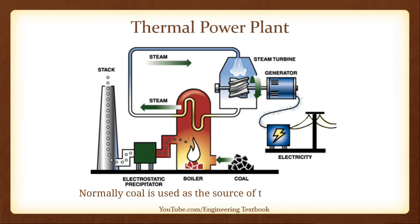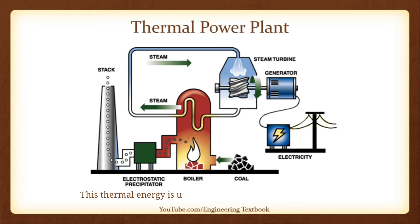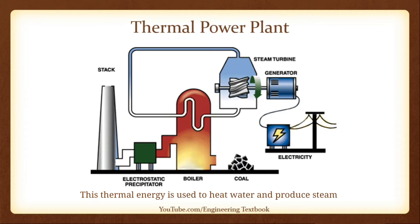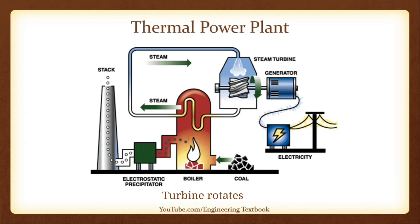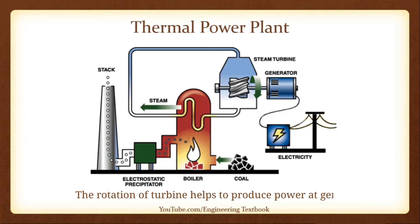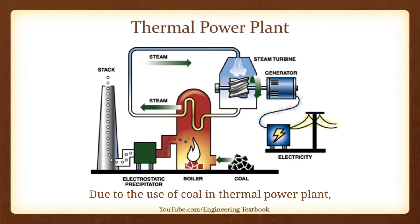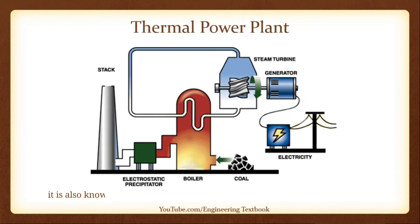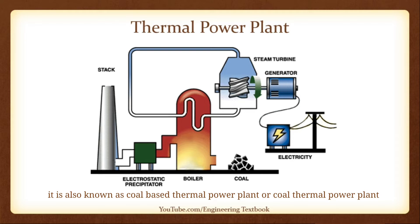A thermal power plant uses thermal energy from fuel to produce electric power. Normally, coal is used as the source of thermal energy. This thermal energy is used to heat water and produce steam. Steam is passed through the turbine, the turbine rotates, and the rotation of the turbine helps to produce power at the generator. Due to the use of coal, it is also known as a coal-based thermal power plant.